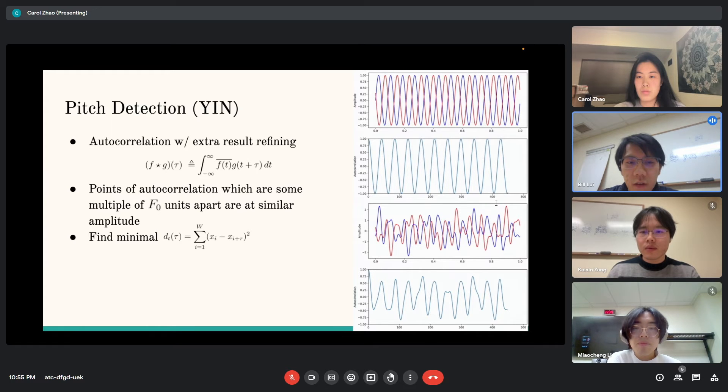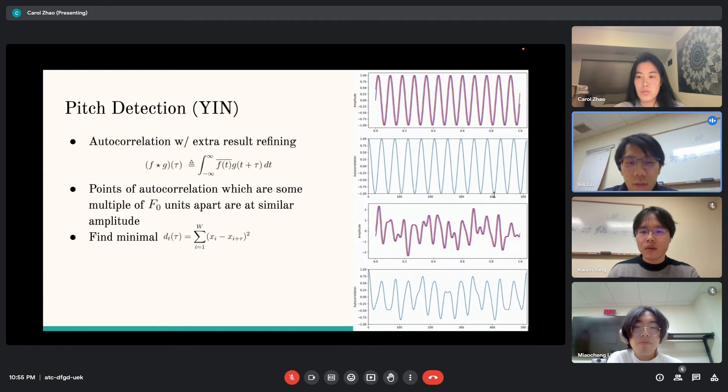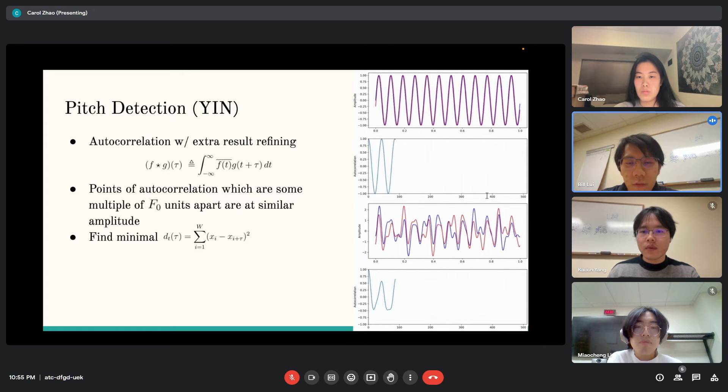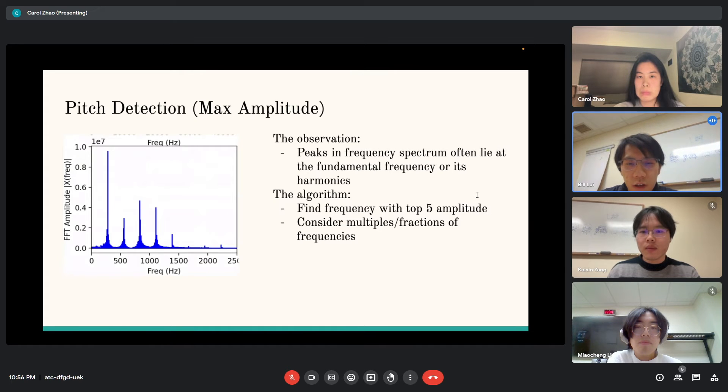The second method of pitch detection is the max amplitude method. The observation is that in the frequency spectrum, the fundamental frequency and its harmonics often lie at the peaks. The algorithm will first find the top five frequencies with the highest amplitudes. Using those five frequencies, we consider multiples of them and fractions of those frequencies, and all together we try to determine whichever one is the lowest fundamental frequency with high harmonics.